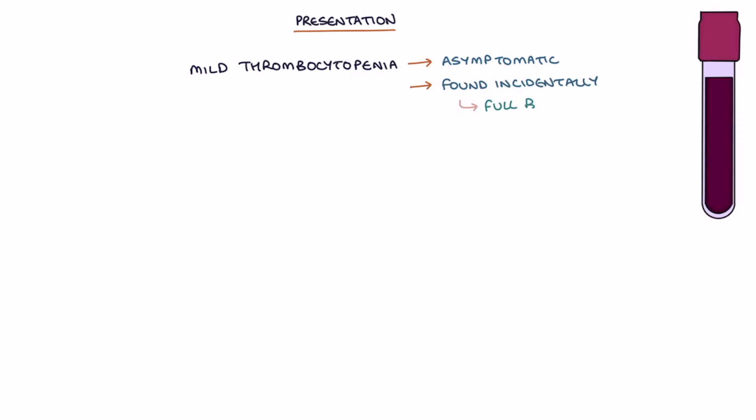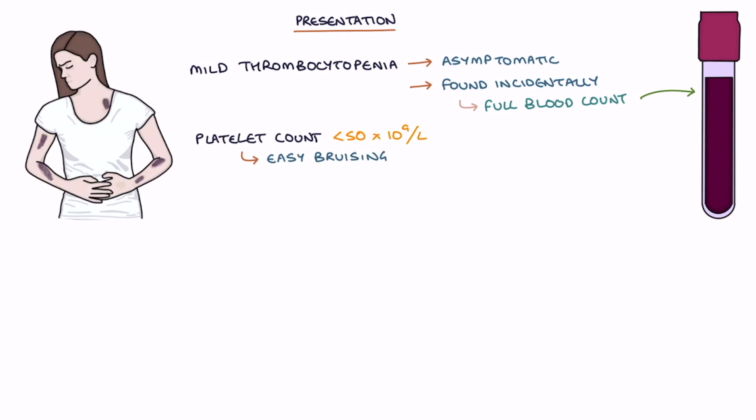Let's talk about the other features of thrombocytopenia. Mild thrombocytopenia may be asymptomatic, meaning the patient has no symptoms, and it's found incidentally on a full blood count blood test. Platelet counts below 50 times 10 to the power of 9 per litre will result in easy bruising and prolonged bleeding times.